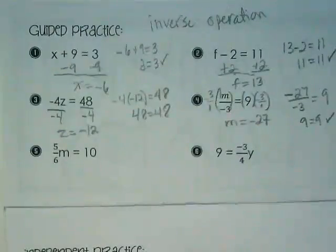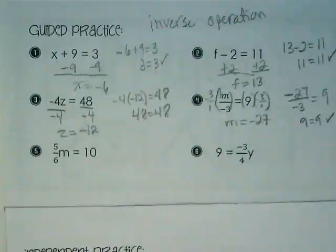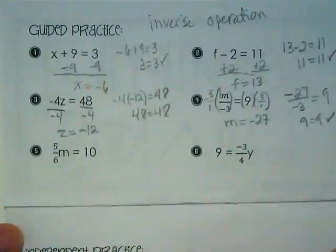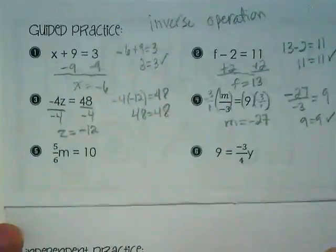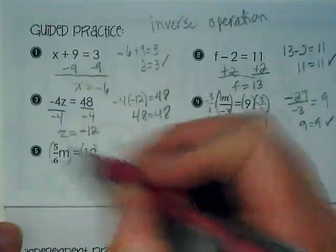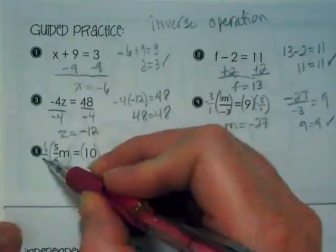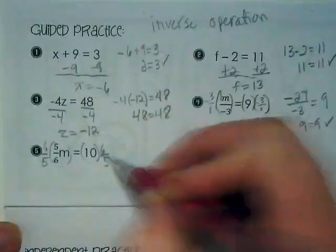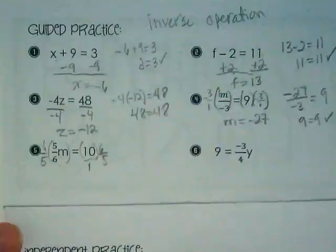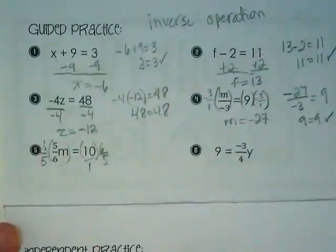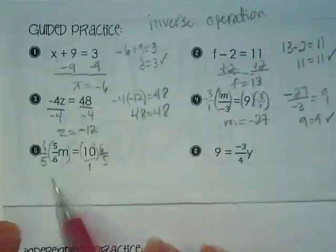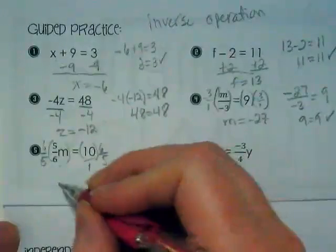Because the ones with fractions are where we find the most mistakes, we're going to do two more practice ones together. 5/6m is equal to 10. What should our first step be? Reciprocal of 5/6, which is 6 over 5. As always, there's an invisible 1 underneath this 10. So on the left side, 6 times 5 is 30, and 5 times 6 is 30. 30 over 30 is a positive 1. That leaves us with just m.